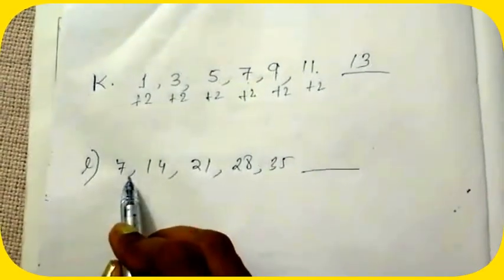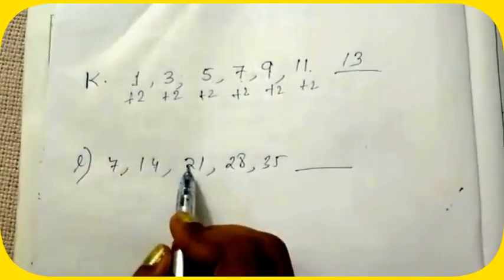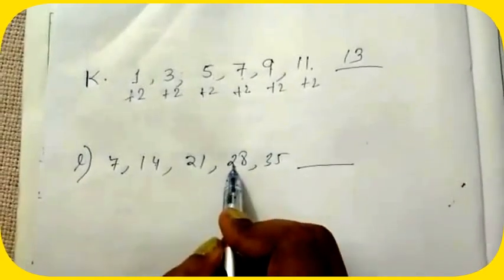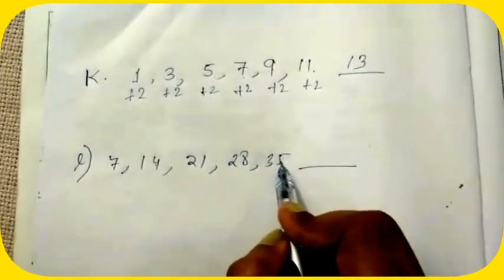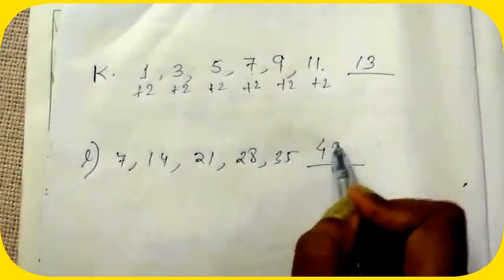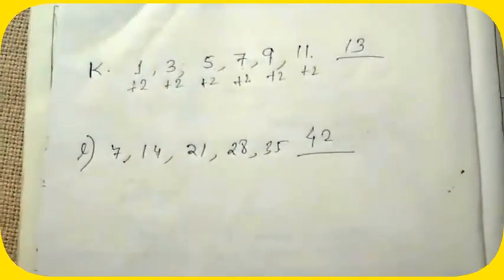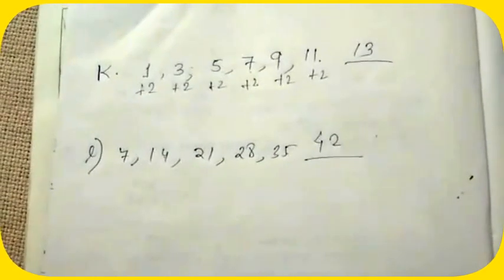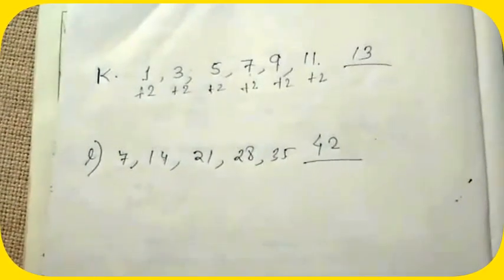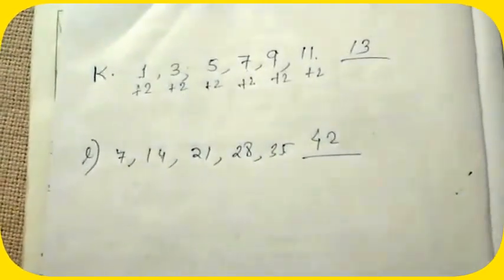Now you see it is the 7 table: 7×1=7, 7×2=14, 7×3=21, 7×4=28, 7×5=35, 7×6=42. So try to do this homework and try to understand what pattern. Today this much, thank you students.